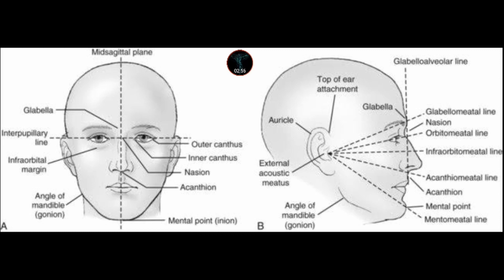The imaginary line which divides the skull into two halves — right and left — is known as the midsagittal plane or the median line. You can see these lines in the anteroposterior and lateral positions: the GML, the OML, the infraorbitomeatal line, the acanthiomeatal line, and the mentomeatal line. These were the various positioning lines of the skull.